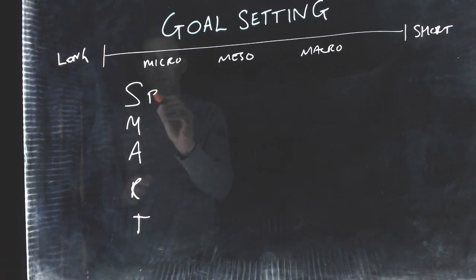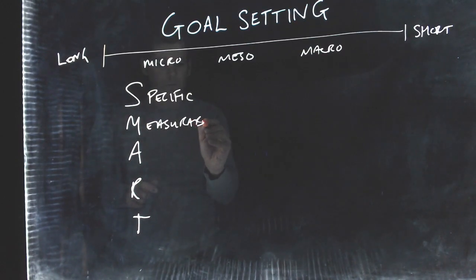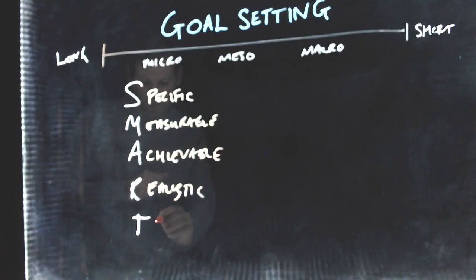The acronym SMART stands for Specific. Measurable. Achievable. Realistic. Put the S on that. And time-bound. Okay, so let's break down each one of these and give them a little bit of meaning.